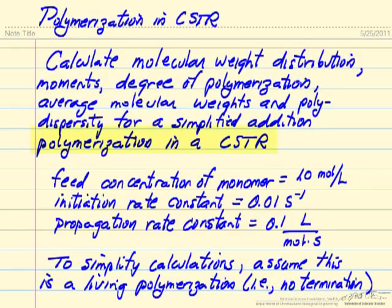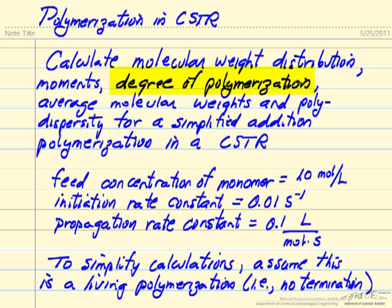In this example, we will look at polymerization carried out in a continuous stir tank reactor, and what we want to do is calculate the molecular weight distribution, the moments, which will explain the degree of polymerization, the average molecular weights, and the polydispersity, which is related to the spread in the distribution.